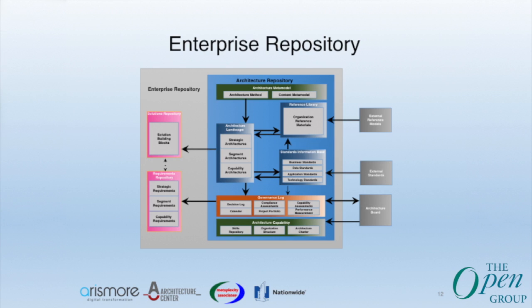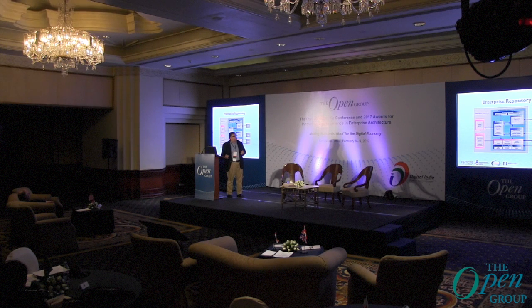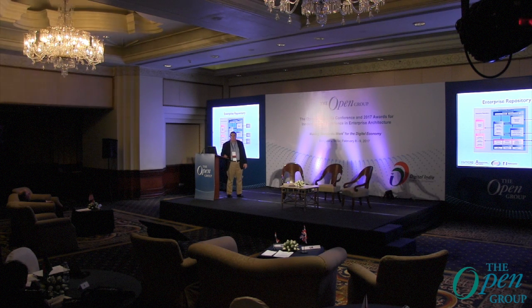Then we have the enterprise repository. You may not have a repository like this — someone asked earlier about where to store ArchiMate files. In TOGAF, this container lets you store and organize your content. It has a place called the landscape, which can contain architecture building blocks stored at different levels of detail: starting at a strategic level, going down to segment levels, and then finally to capability architectures. There's also a requirements repository and a solutions repository, which could be a CMDB — a configuration management database — where you store operational system descriptions.